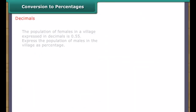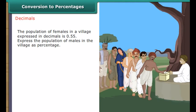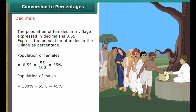Decimals. The population of females in a village expressed in decimals is 0.55. Express the population of males as a percentage. Population of females equals 0.55, which equals 55/100, which equals 55%. Population of males equals 100% minus 55%, which equals 45%. Males in the village form 45% of the total population.